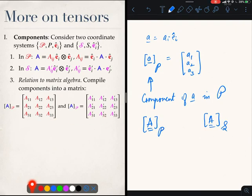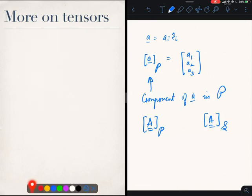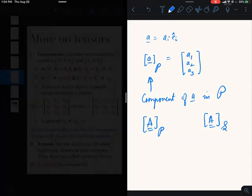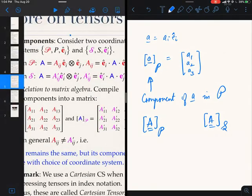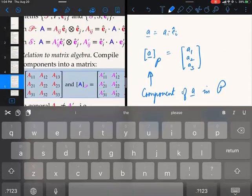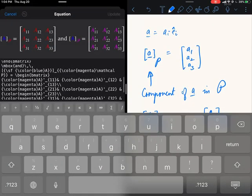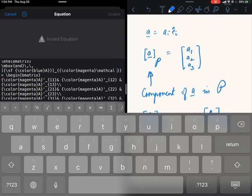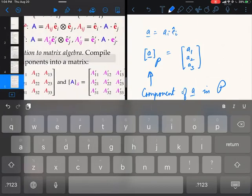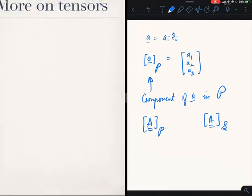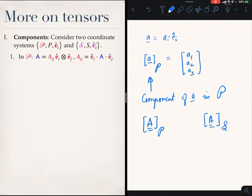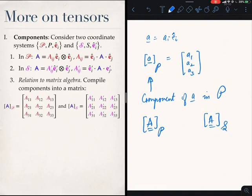There is a typo here, I have put P here, it should really be S. The components of A in S is given by these.